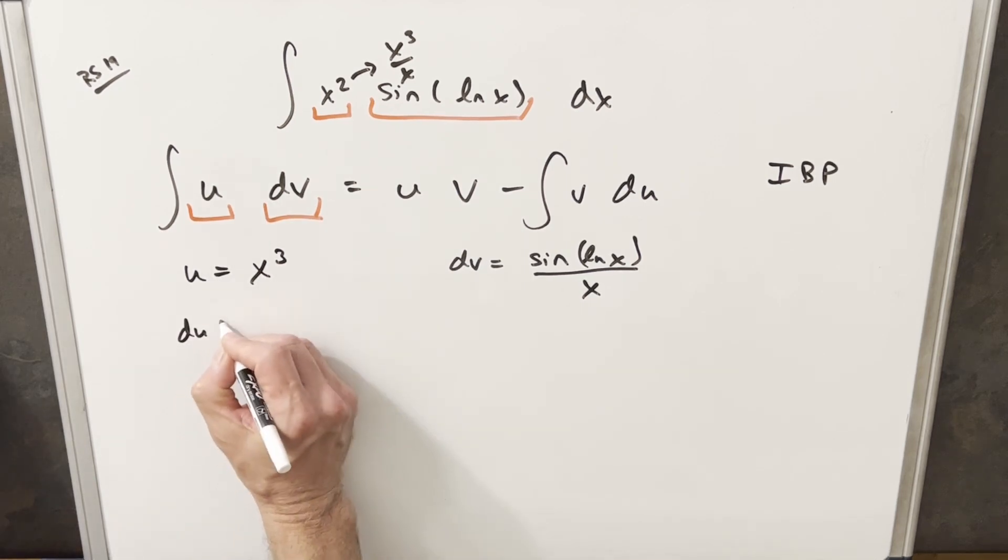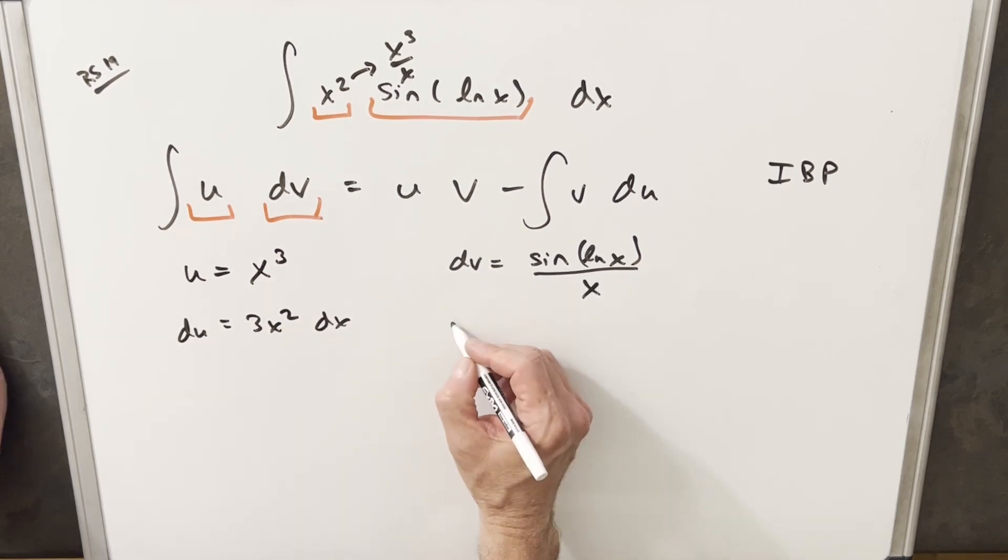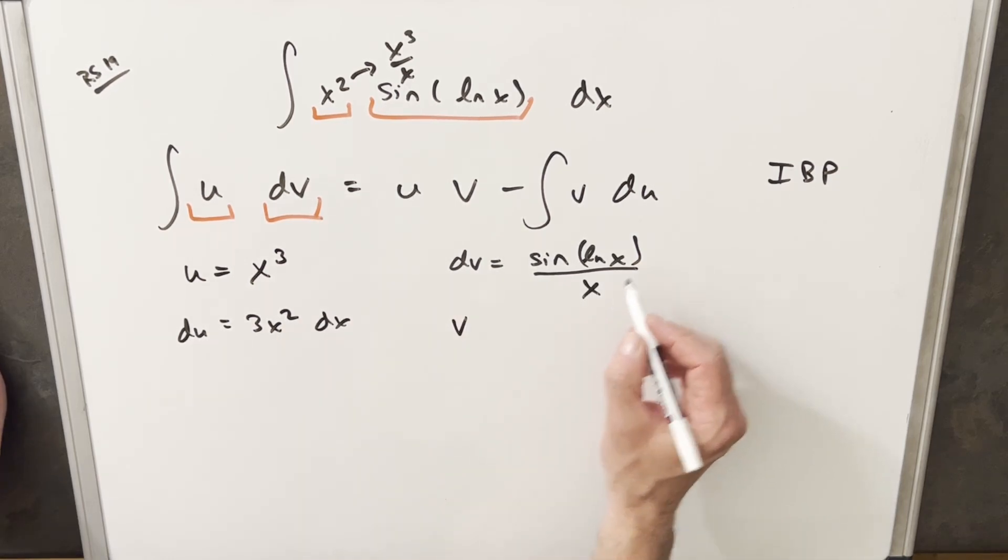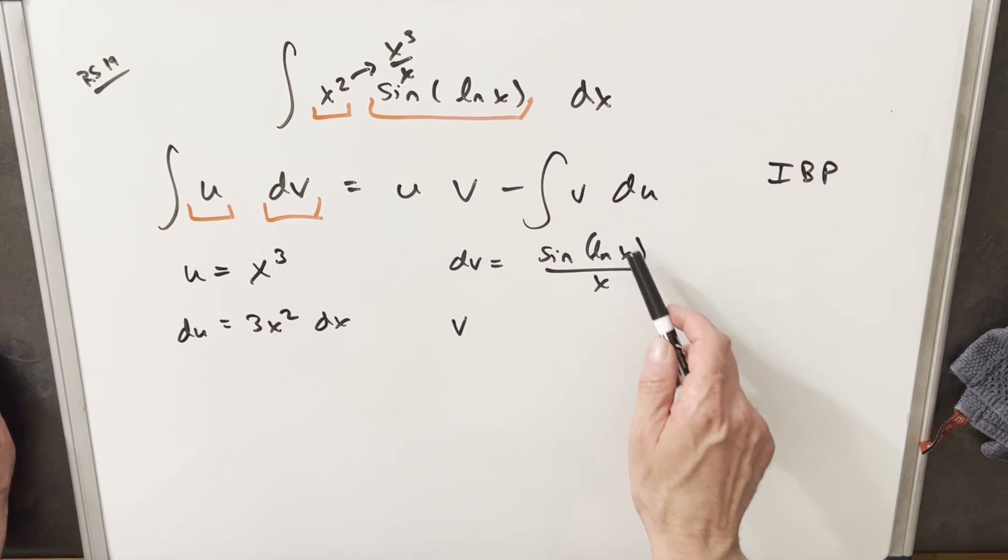Then we'll take our derivative. So for du over here, we're going to get 3x squared. Now here for our dv, we're going to want to integrate this to get our v value. Then now to integrate this, we can kind of do like a u substitution in our head.